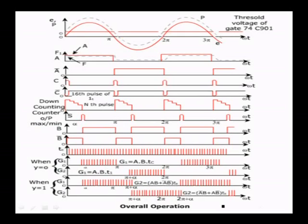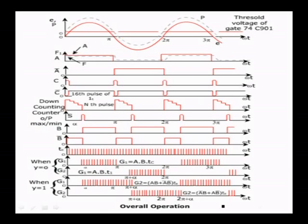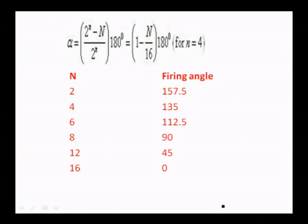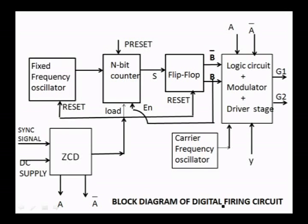In summary: the digital firing circuit consists of a fixed frequency oscillator that gives clock pulses to the n-bit counter with a preset value. When the counter reaches the preset value, it sets the flip-flop, which is latched until another zero crossing occurs. The output is given to the logic circuit, modulator, and driver stages where pulses are generated. The ZCD gives output whenever the input signal crosses zero, producing A and A-bar which are fed to the logic circuit and modulator driver stages.